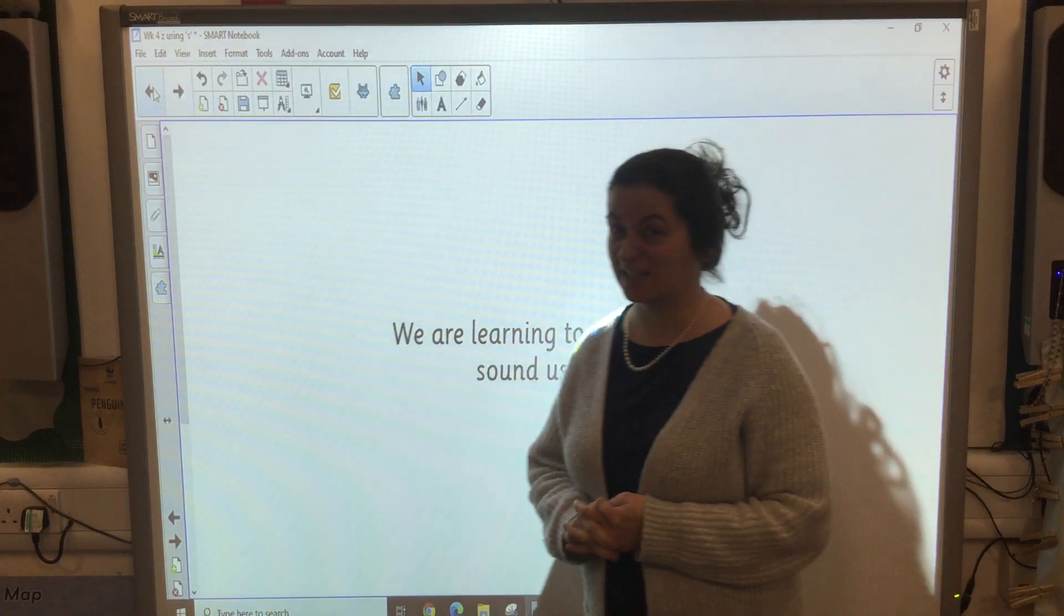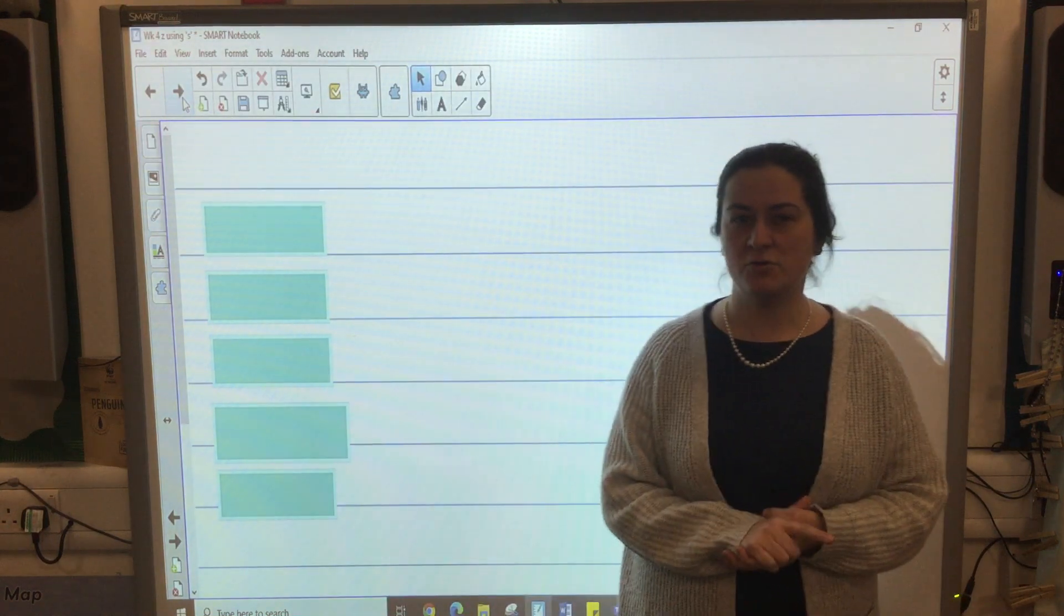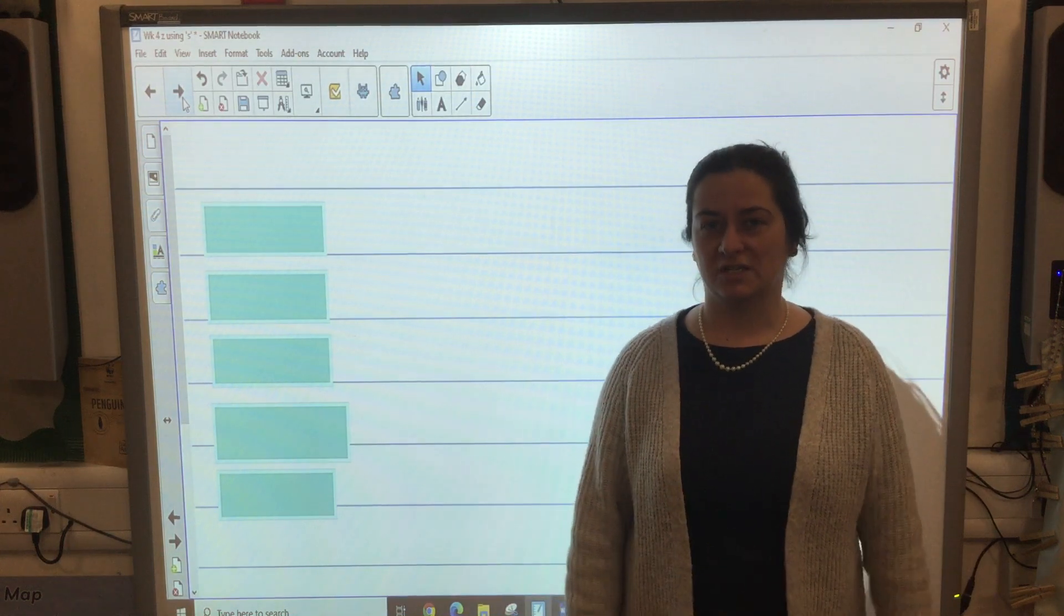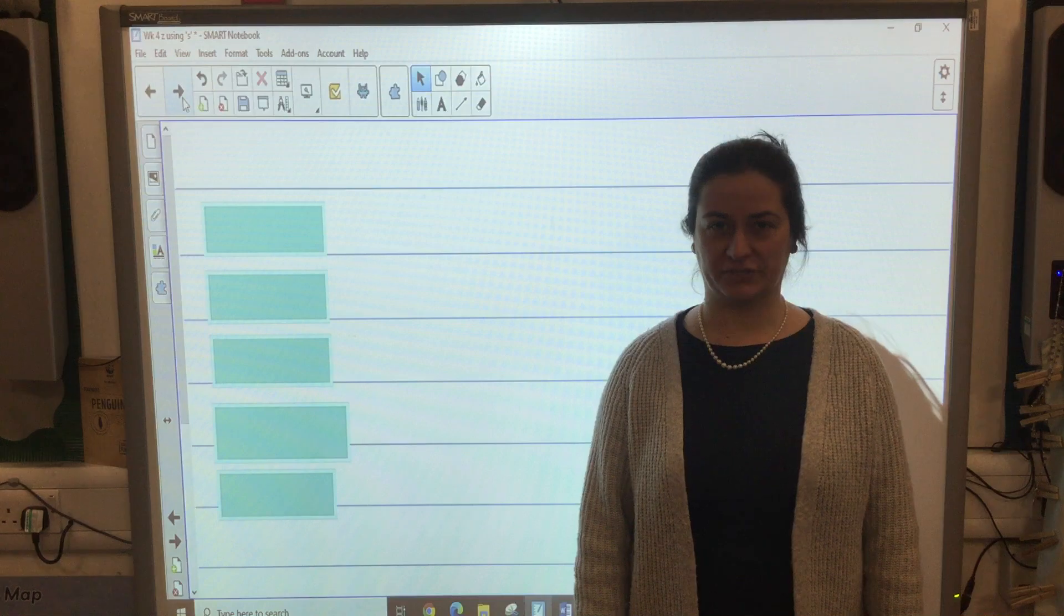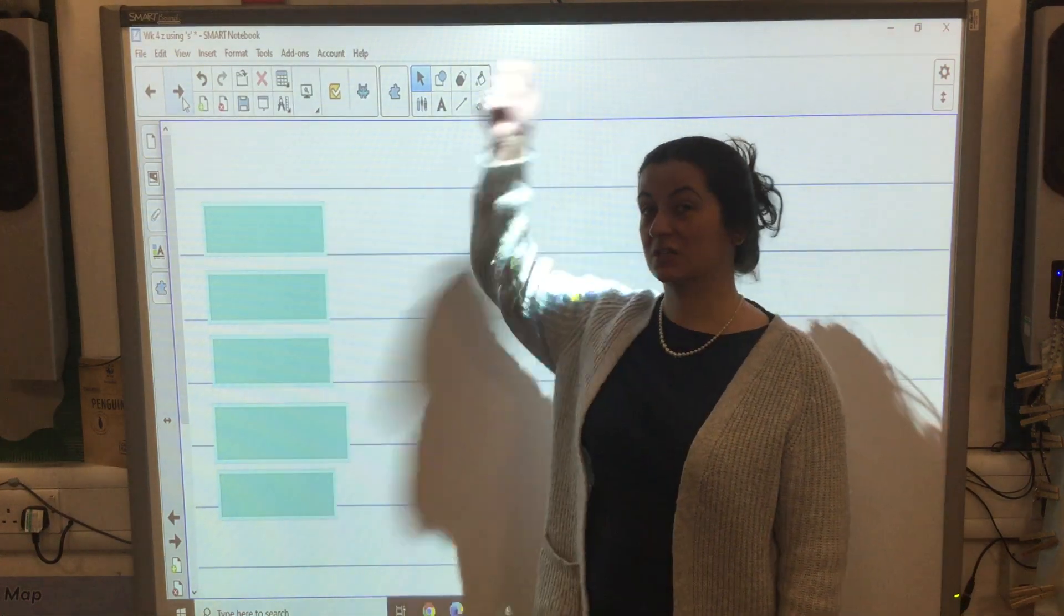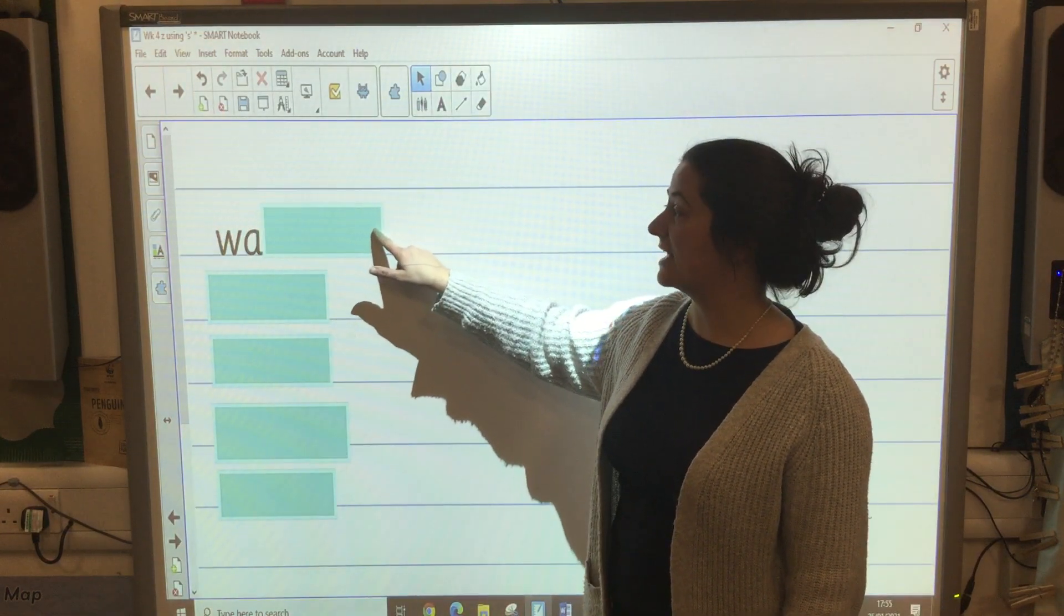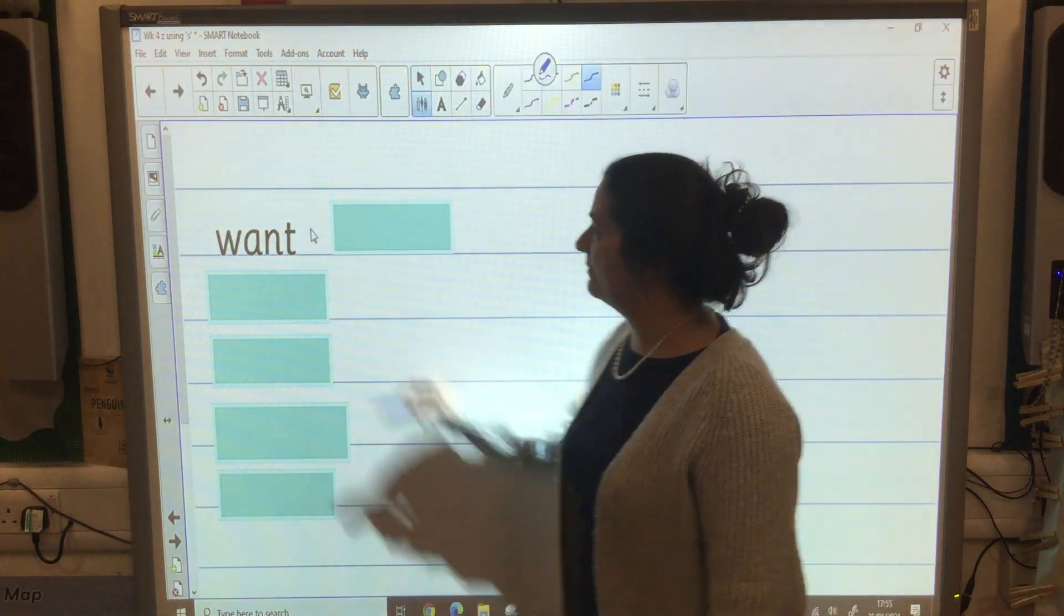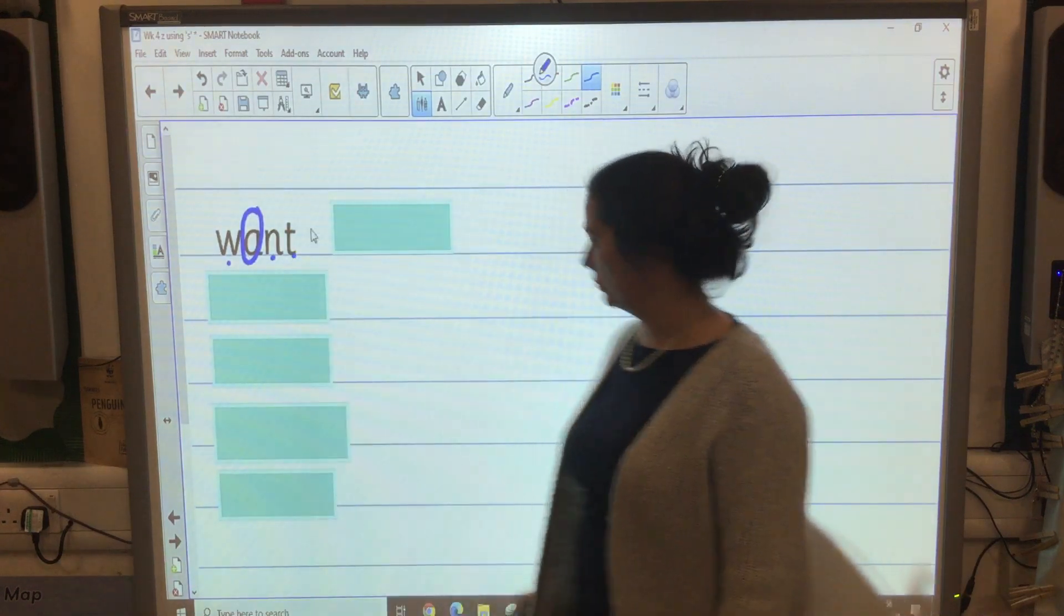But first I'd like to test your brains. I'd like to see if you can remember how to spell these from the other day. The first word is want. I want a nice big cup of tea. Want. Check and change. Did you get w-a-n-t? Did you remember this was the tricky part of the word? W-a-n-t. Want.